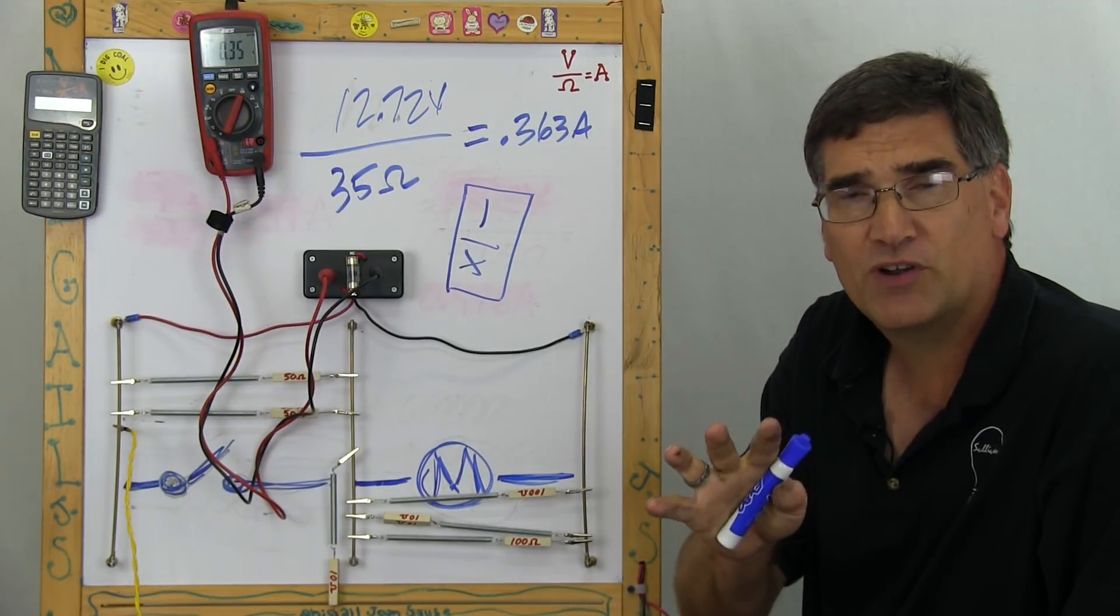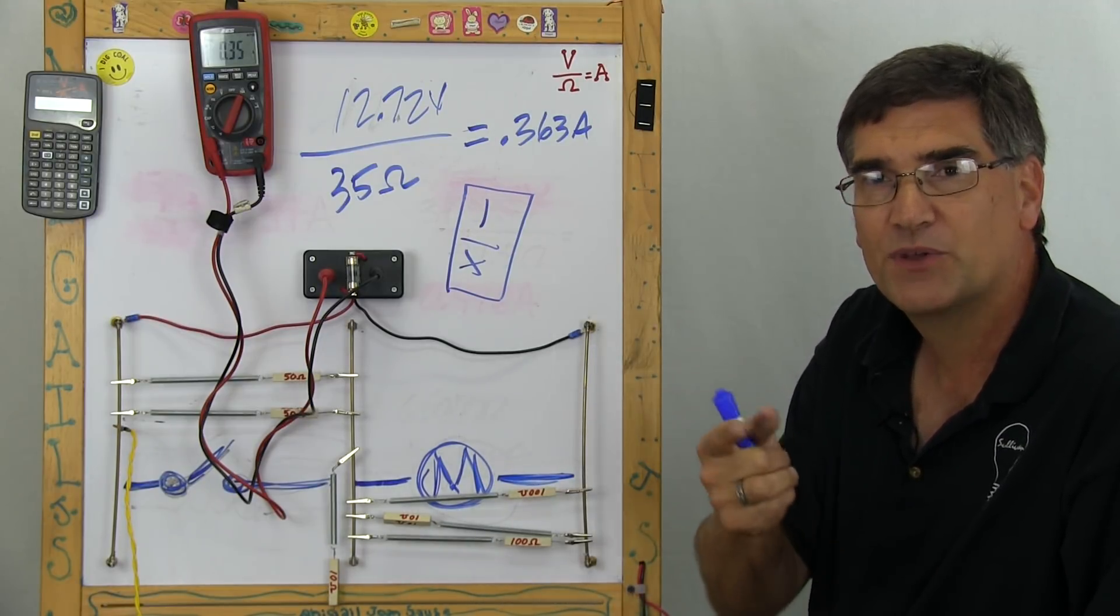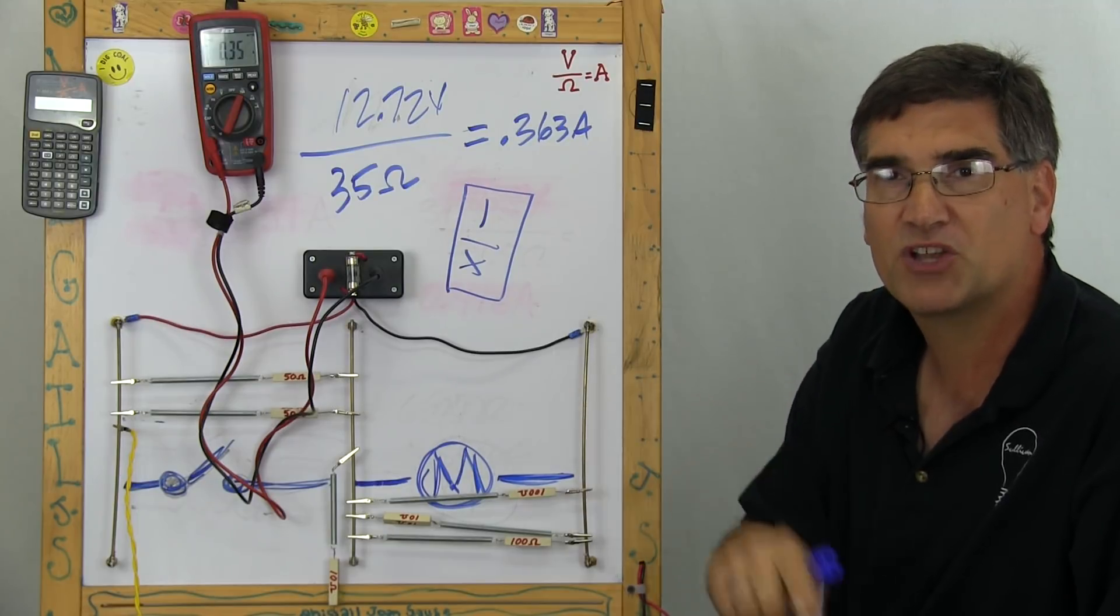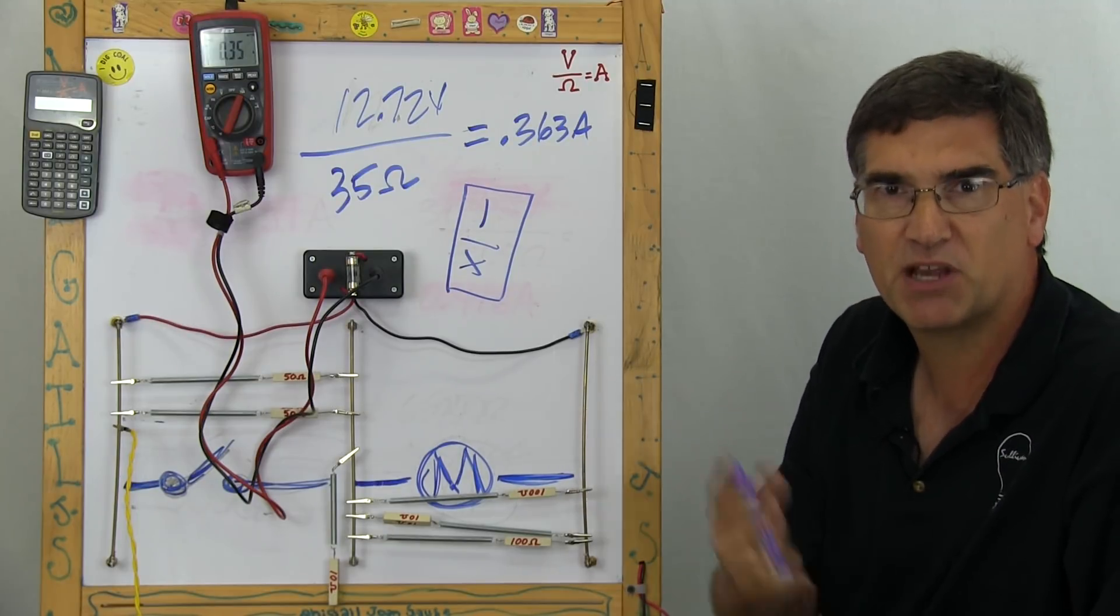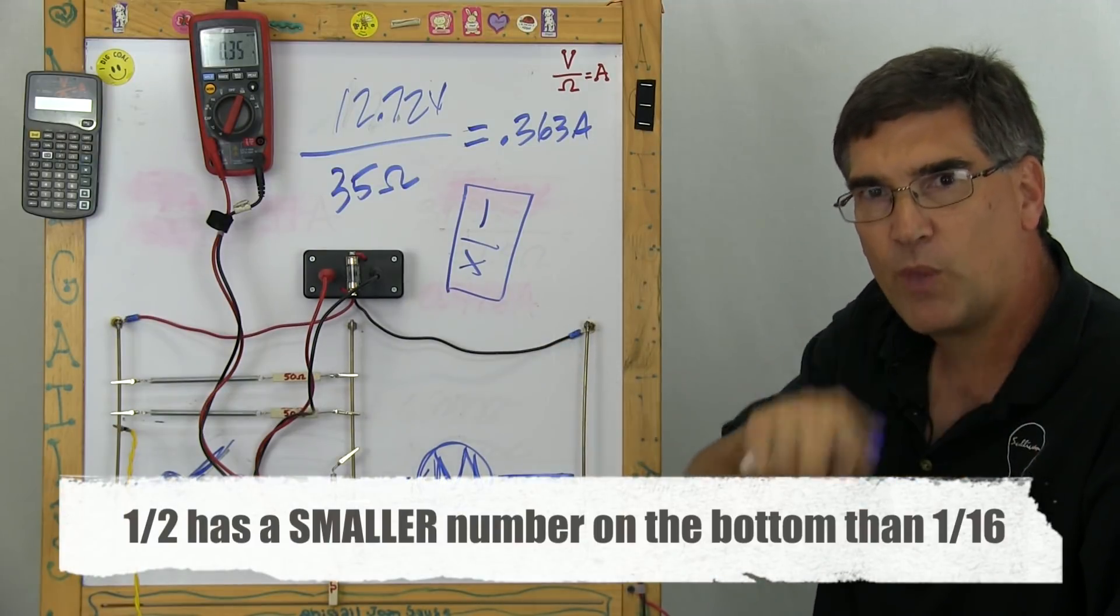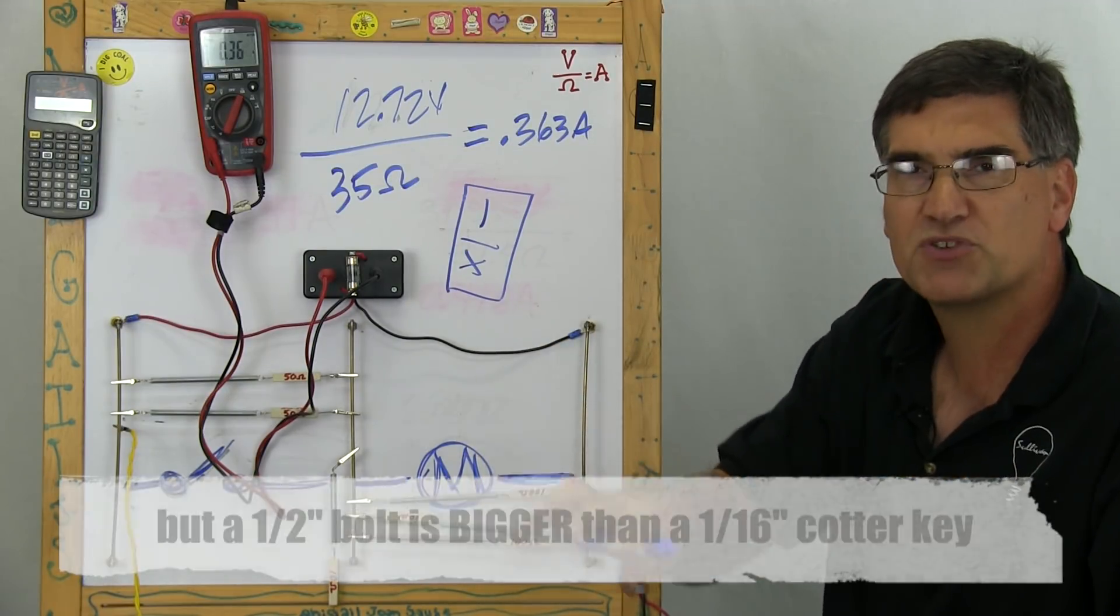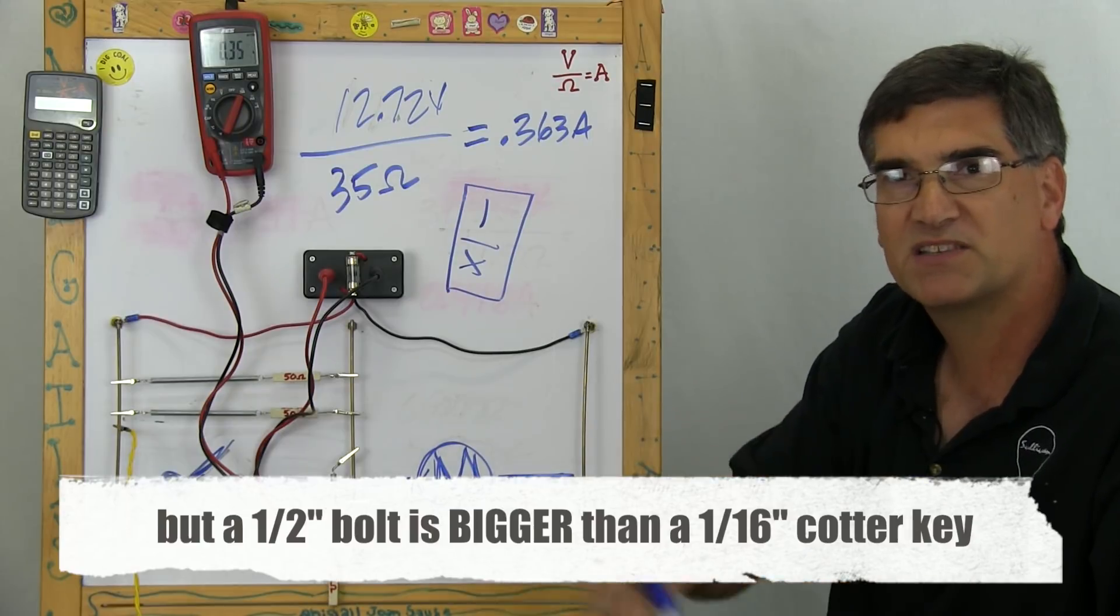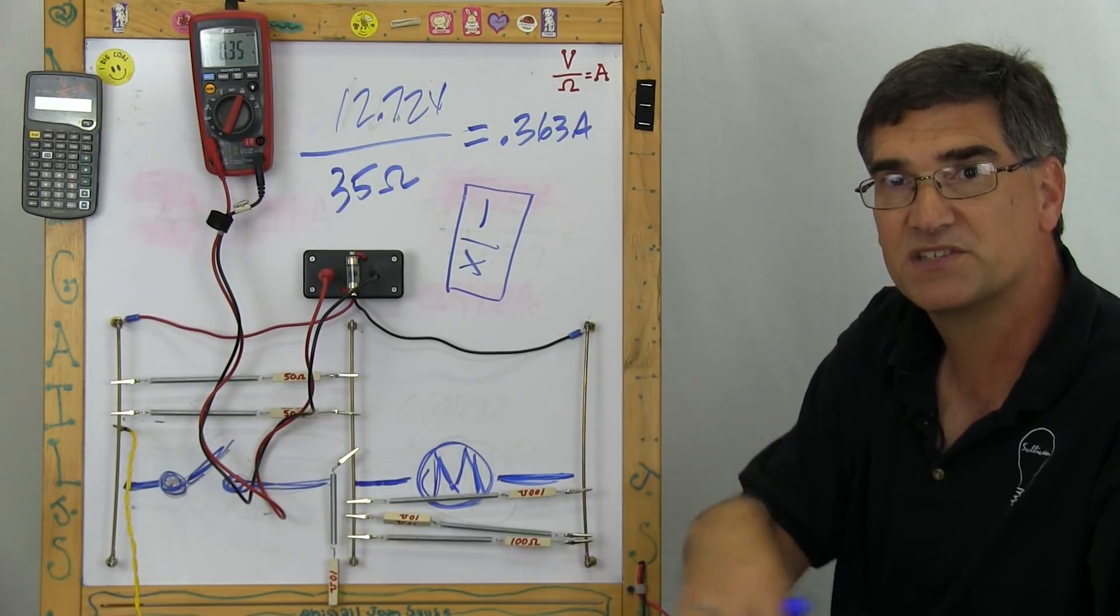And for those of you who are interested, the reason the resistance goes down with the inverse formula is because the bottom of the equation, the bottom of the fraction gets bigger. So if you ever think about it, the one over, one over, all those numbers on the bottom make the bottom bigger, which makes the total answer smaller. That's why the resistance drops.